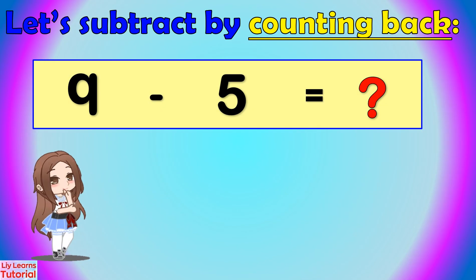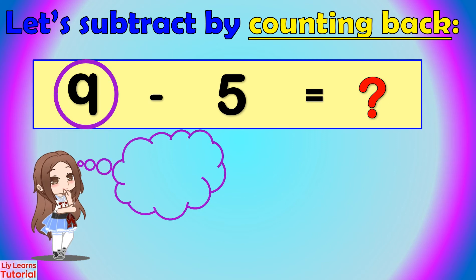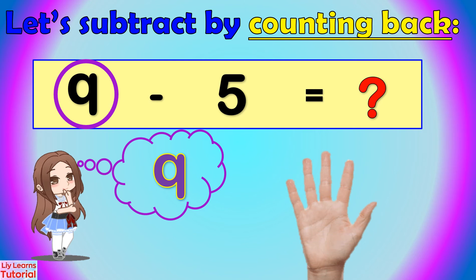Let's subtract 9 minus 5. First, put the minuend or the bigger number in your head — that is 9. The subtrahend on your fingers — that is 5. Then count back from 9: 9, 8, 7, 6, 5, 4. The answer is 4.